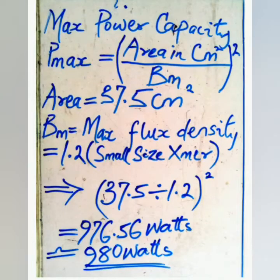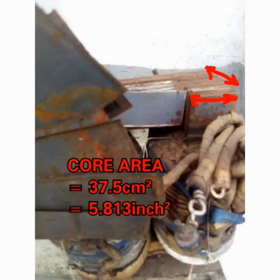Maximum power capacity is the effect of voltage multiplied by current which the machine can withstand. It is obtained by the formula: area of core in cm squared, divided by Bm, all squared. Bm is the maximum flux density — for a small transformer like this, we use 1.2 as the value. Our maximum power capacity is approximately 980 watts. We can see that the size of the core plays a role in the power capacity of an AC welding machine.